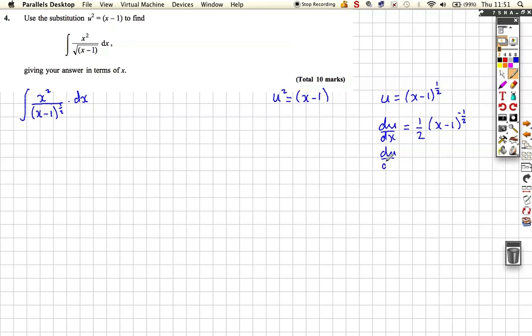So du/dx is just, well that's a half, this is u to the minus 1 here, this is u to the minus 1, so it's 1 over 2u. So rearranging all this what do we get? We get 2u du is equal to dx, so we can replace this.